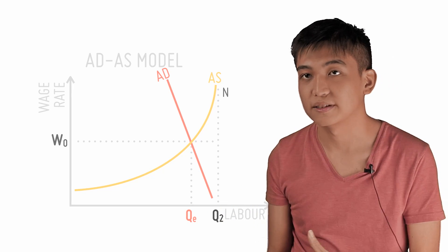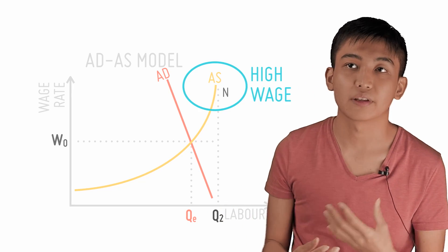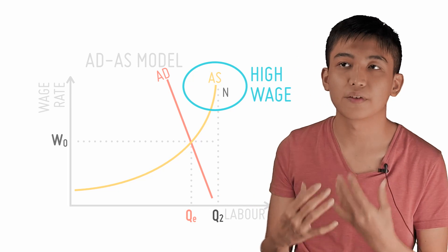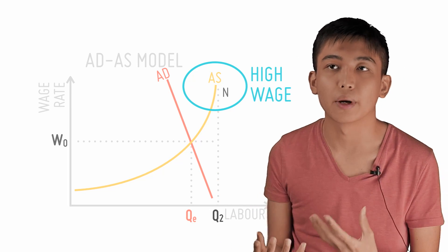Notice that at high wage rates, the aggregate supply of labour tends towards N. This is intuitive, given that workers will be willing to supply more labour at higher wage rates.